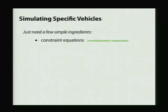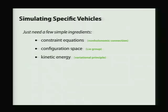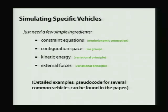Describing your vehicle is actually pretty straightforward. We just need a few simple ingredients. For instance, we need equations defining the constraints on the system. We need to know what the configuration space of our vehicle is. So for instance, the car, the configuration space would be rotations and translations in the plane. We need to know the kinetic energy of the system, usually something like one half mv squared, and any external forces. And we have detailed examples of how to plug in a vehicle description and get out an integrator in the paper for the case of a helicopter, boat, car, some standard examples.